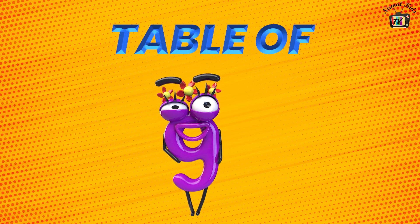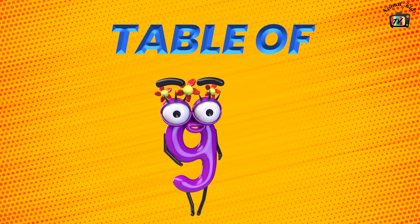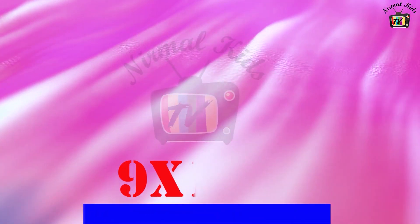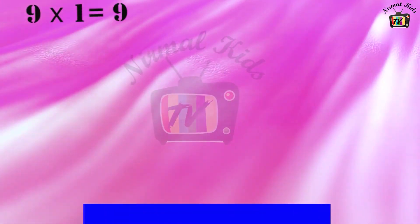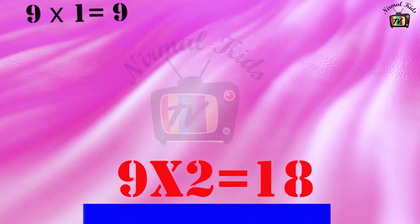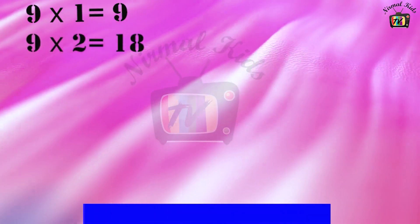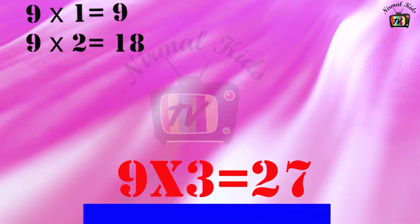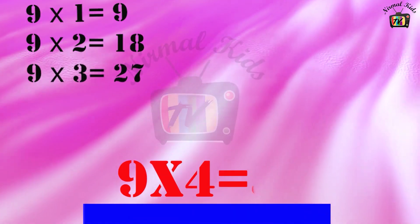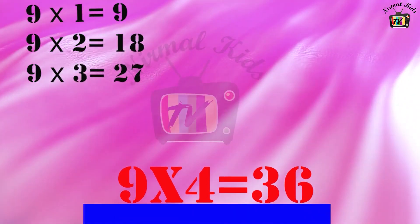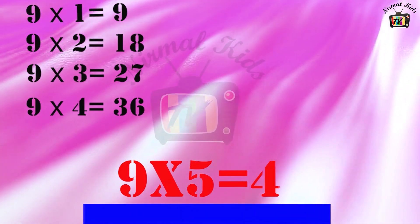Table of 9. 9 1's are 9. 9 2's are 18. 9 3's are 27. 9 4's are 36. 9 5's are 45.